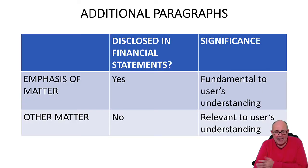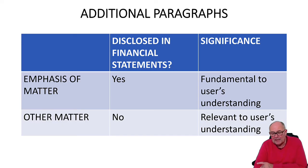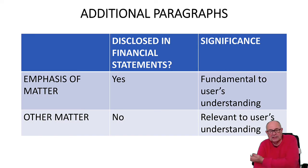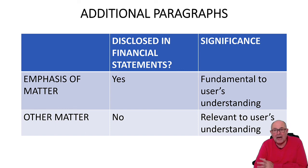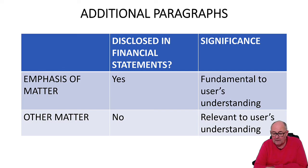Other matter is also less significant, but this is something which the auditor regards as relevant to the user's understanding that is not mentioned in the accounts — for example, a change of audit firm.